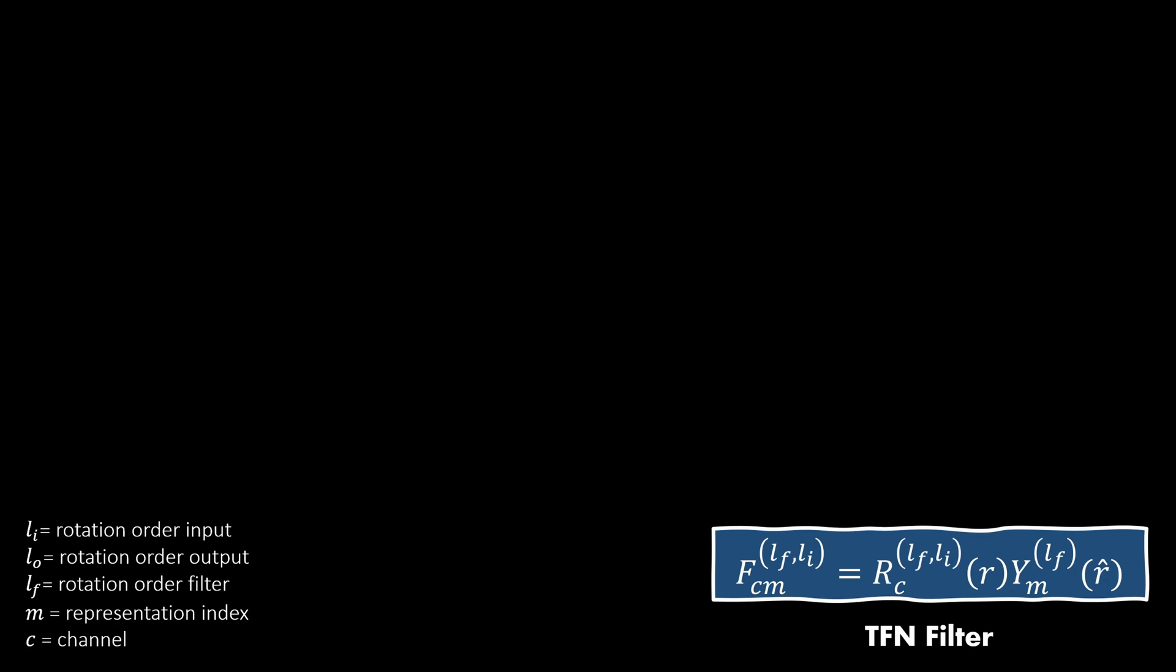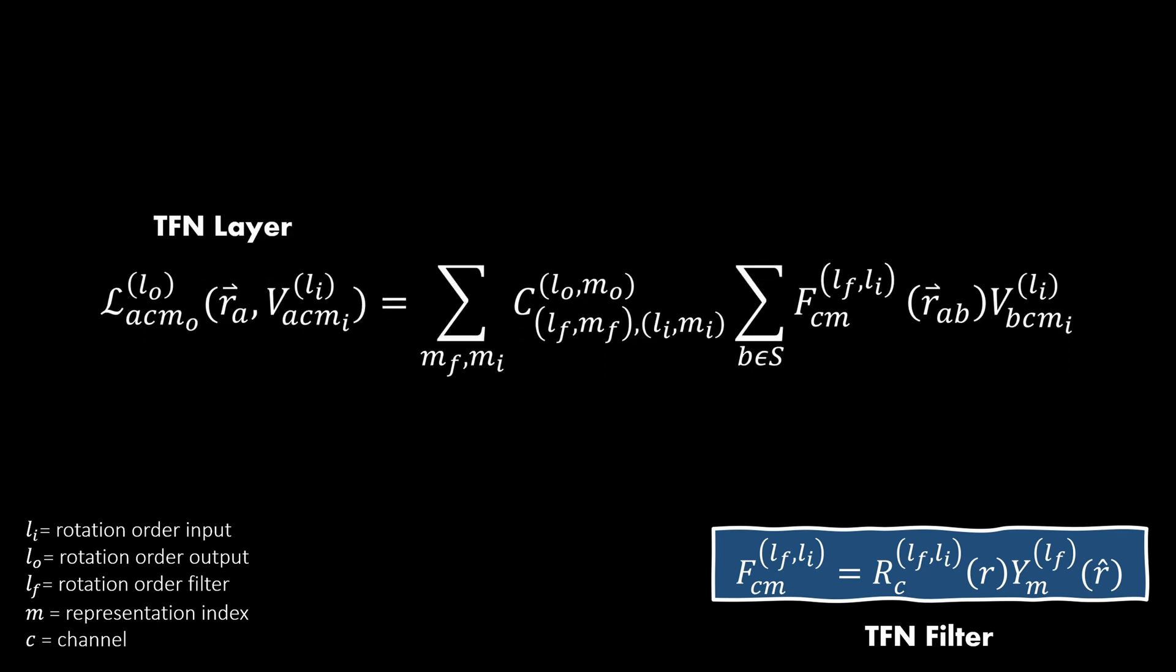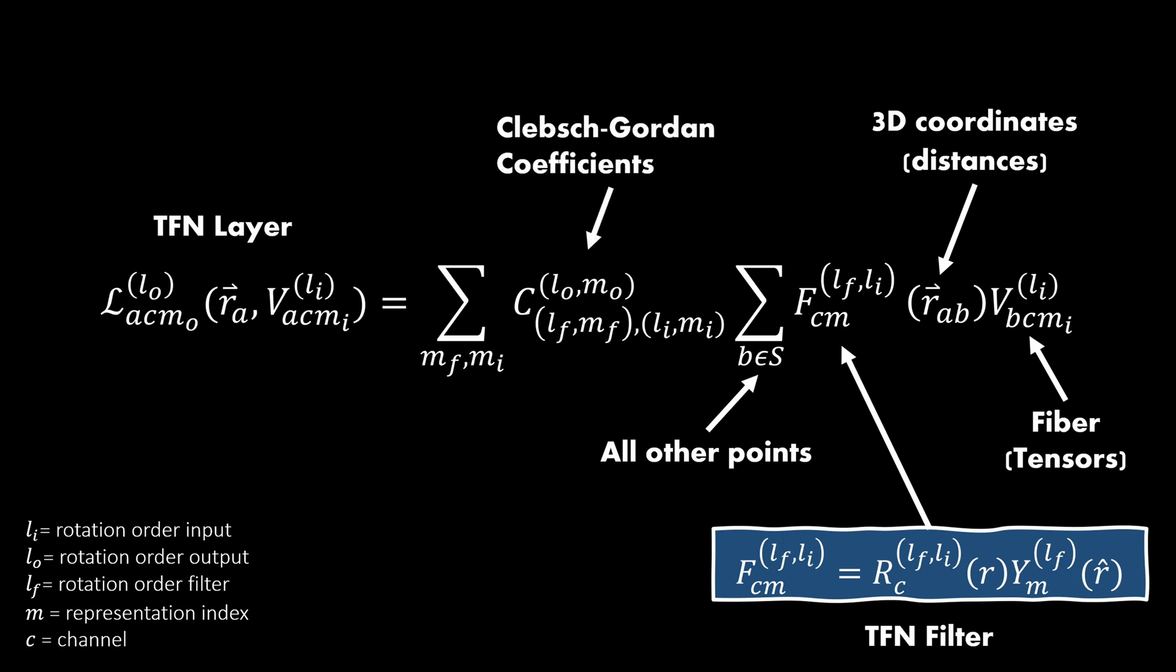The full layer definition of tensor field networks is described by this formula. Here we can find the filter which I've just talked about. And the input for this filter is the difference between vector a and b. a is here the central points and b are all other points within the point cloud. For each of these points we have a feature vector denoted with v. Finally, the Clebsch-Gordon coefficients tell us how to combine the different fibers in a meaningful way.